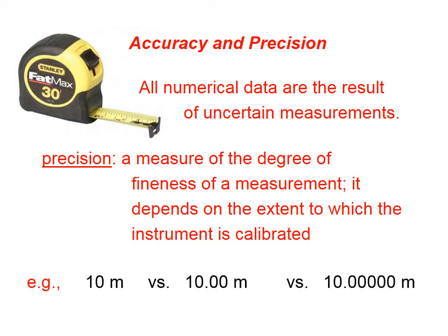For example, if we have a measurement that reads 10 meters, in science that means something, and what it means is not the same as 10.00 meters or 10.0000 meters. This last measurement is more precise than this one. The degree of fineness of this measurement on the right is much higher than on the left.